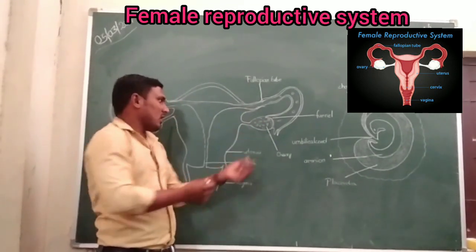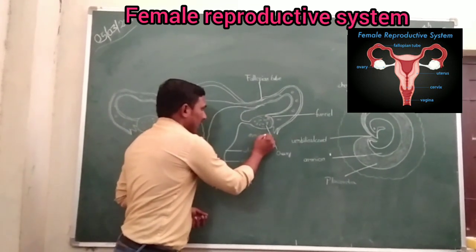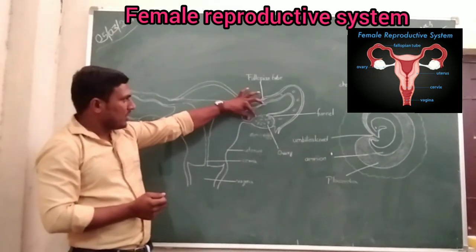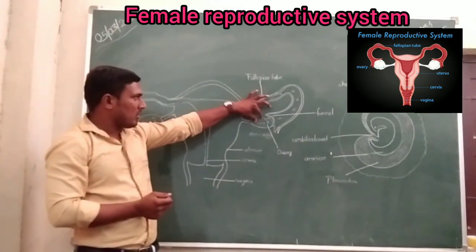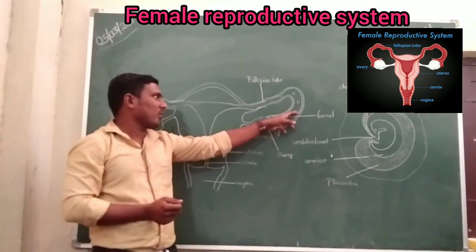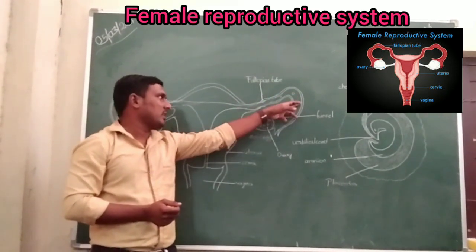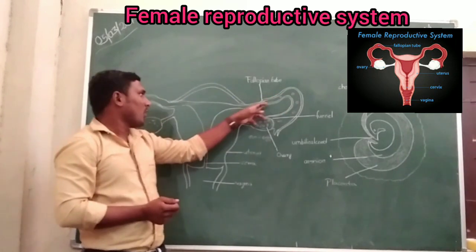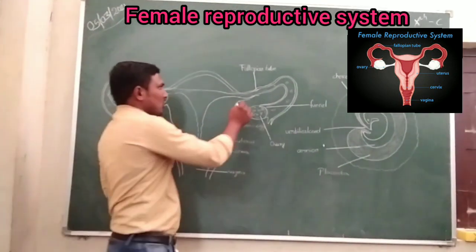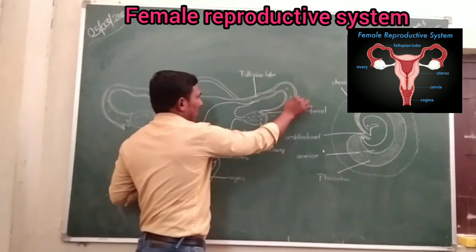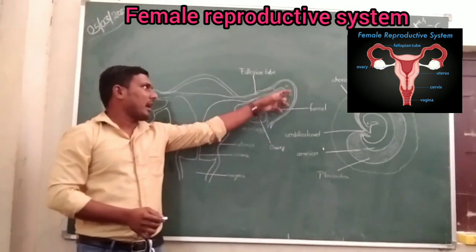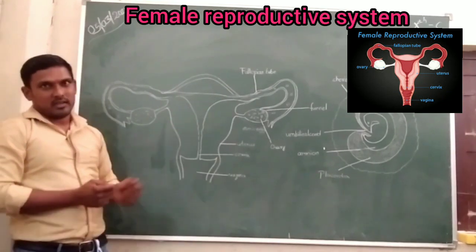The ovary releases the egg through ovulation. After the ovulation process, the egg enters into the funnel of the fallopian tube. The fallopian tube is a tubular structure through which the egg travels to reach the uterus.